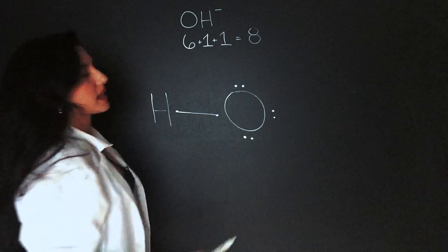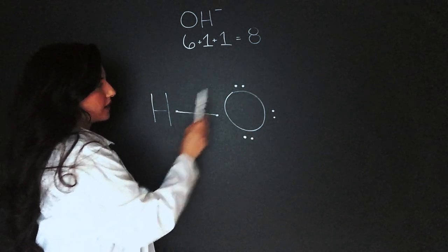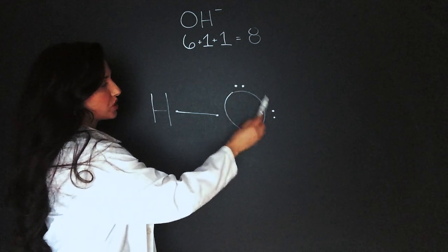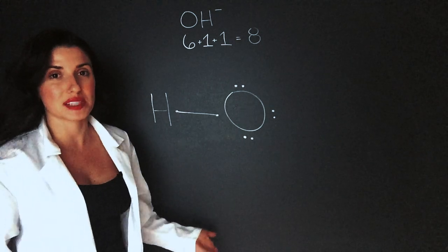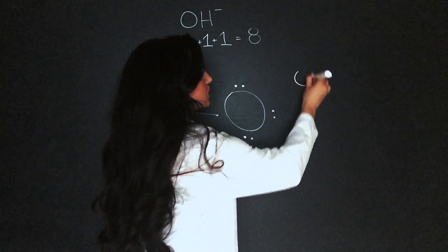So now if you count this up, hydrogen has one, oxygen has one, two, three, four, five, six, seven. We have one more electron than we're supposed to have, so we write it as OH-.